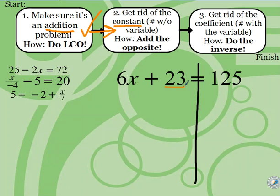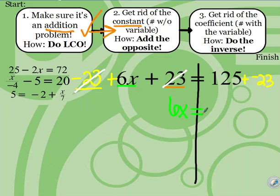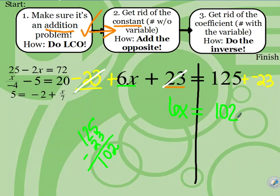Step 2 says get rid of the constant, and we said 23 is the constant. To get rid of it, we add the opposite. The opposite of 23 is negative 23. So we add negative 23, and whatever we do to one side, we do to the other. You should notice 23 and negative 23 cancel — that's what we want, to get the variable more by itself. What's left on the left-hand side is 6x. On the right, 125 plus negative 23: they're not on the same team, so 125 minus 23 equals 102, and it's positive 102 because the positive team won.